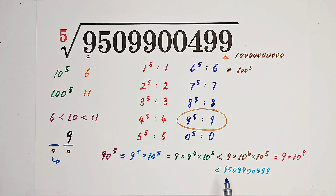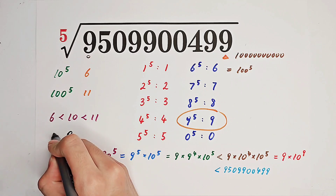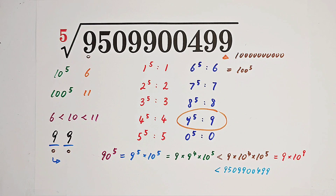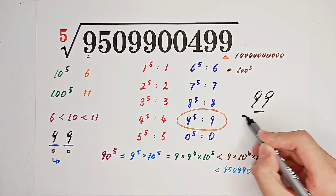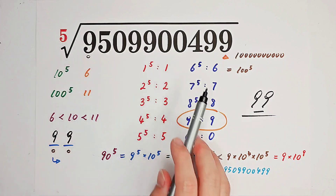This huge number is greater than 90^5, so its fifth root is greater than 90. That implies our result is greater than 90, and its unit digit is 9, so the tens digit must also be 9. Therefore 99 is the answer. Press 99 to the power of 5 on your calculator and it's going to tell you that the result is this number under the root.